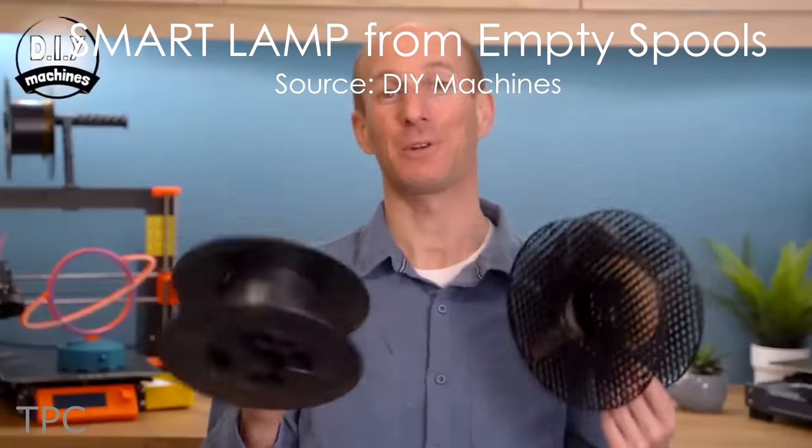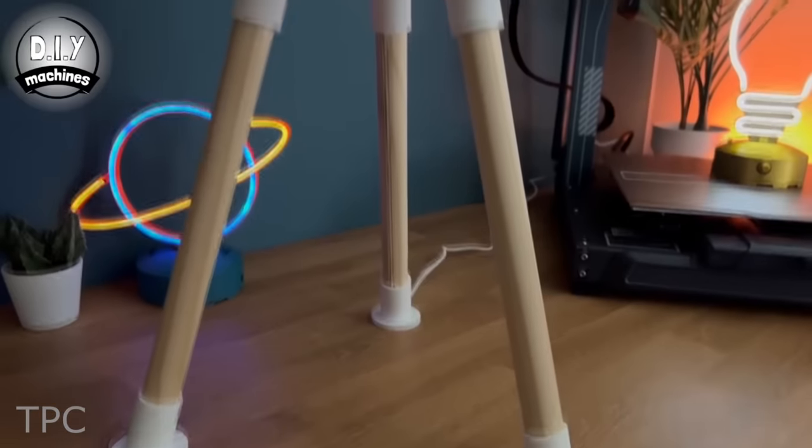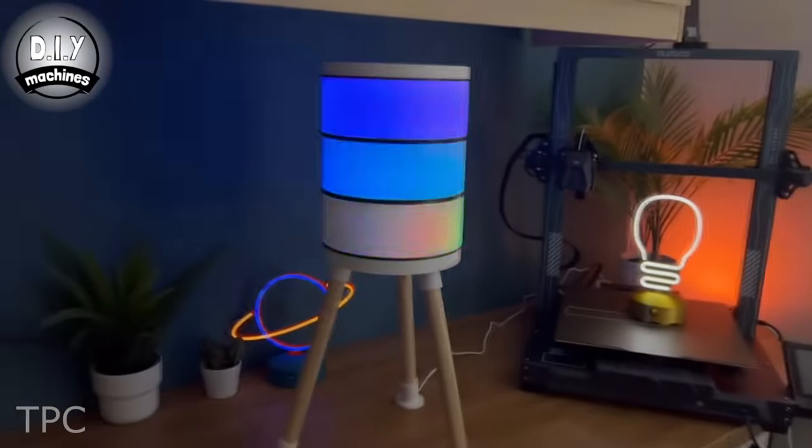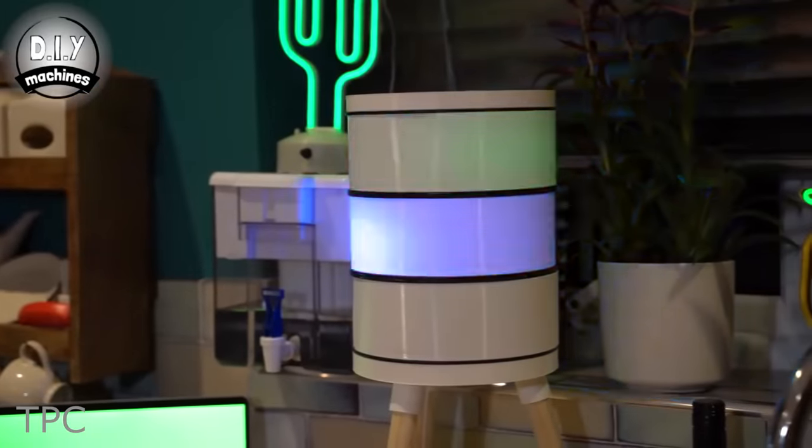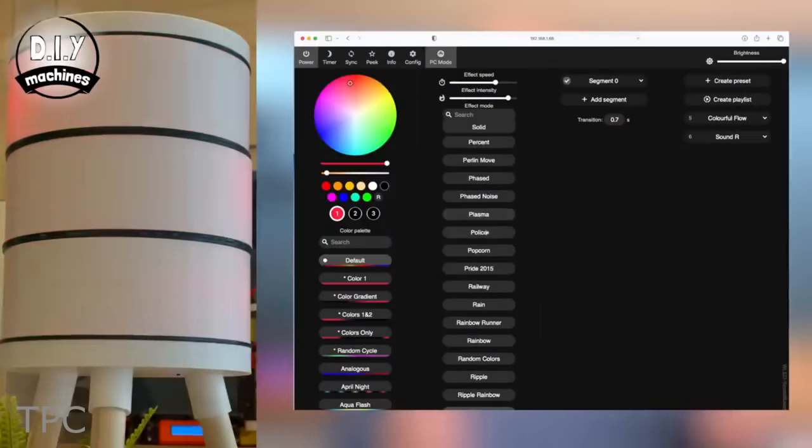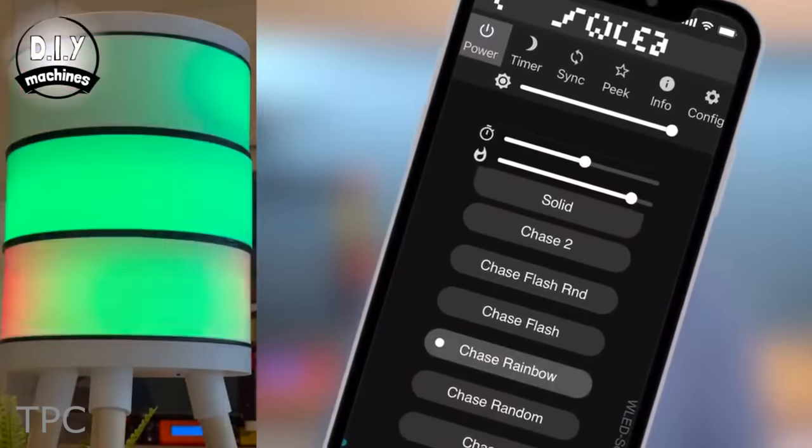Lewis had some old empty filament spools lying around, so he decided to make a DIY lamp using them. It's just not any ordinary lamp. It's equipped with some cool features. This lamp can be controlled from any device via Wi-Fi using a WLED web interface or several free apps. Or you could use the discrete dimmer control on the top to adjust the brightness.